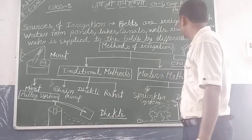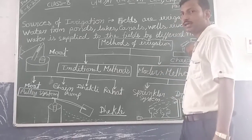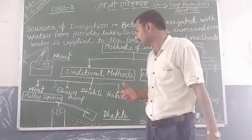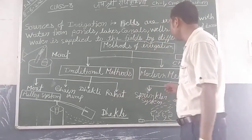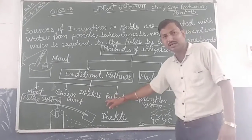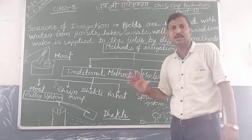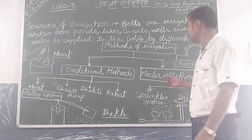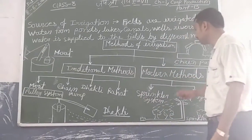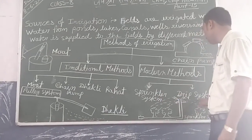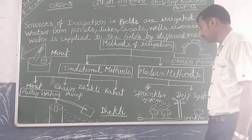This is the same kind of work but it is different. Now we have the modern method. The modern method is cheaper and takes less time. The modern method includes the sprinkling system and the drip system.